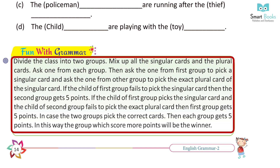Fun with Grammar. Divide the class into two groups. Mix up all the singular cards and the plural cards. Ask one student from each group: the one from the first group picks a singular card, and the one from the other group picks the matching plural card. If the first group fails to pick the singular card, the second group gets 5 points. If the second group fails to match the plural card correctly, the first group gets 5 points. If both groups pick correct cards, each gets 5 points. The group with more points wins.